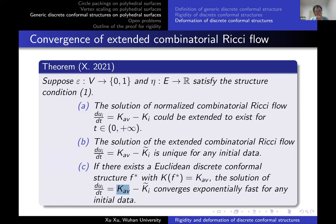The remaining problem is similar to the inversive distance case: along the extended flow, the triangles may degenerate. Even though we proved global convergence under the existence of a discrete conformal structure with prescribed combinatorial curvature, we cannot prevent triangle degeneration.